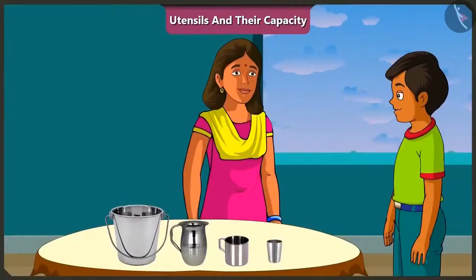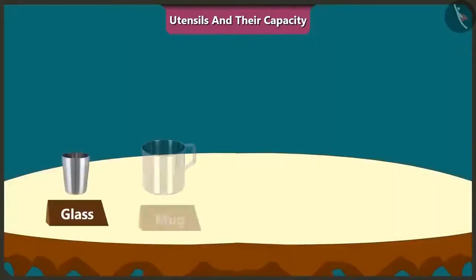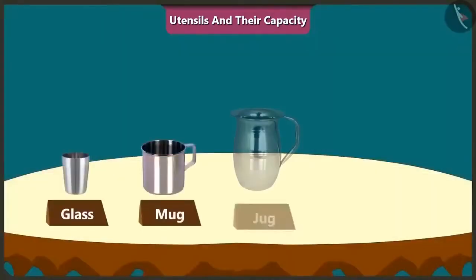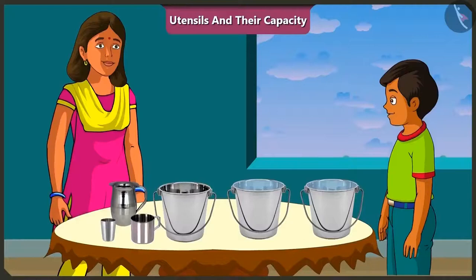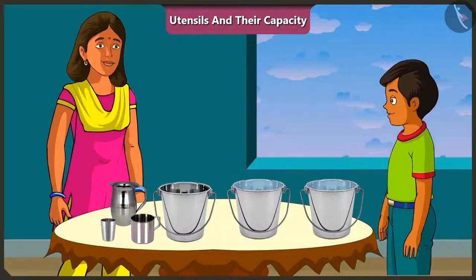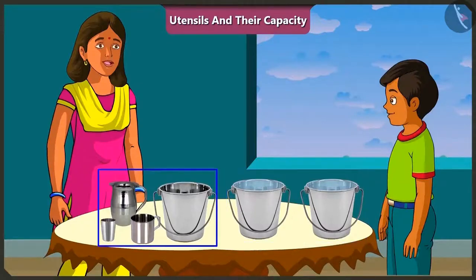So, which vessels and their capacities are we going to find today? Mishtu, today we will find the capacity of this glass, mug, jug and this bucket. Mommy, what are these two buckets of water for? Mishtu, we will use this water to find the capacity of all these vessels.